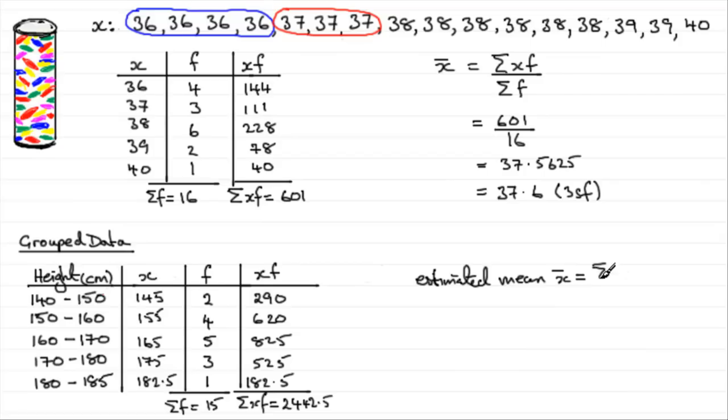So if we just write the estimated mean x bar, all we need to do is sigma xf all over sigma f. And if you do that sum, you're going to have 2442.5 divided by the 15 students. So if they were all the same height, that height would come out to be 162.83 recurring centimetres.